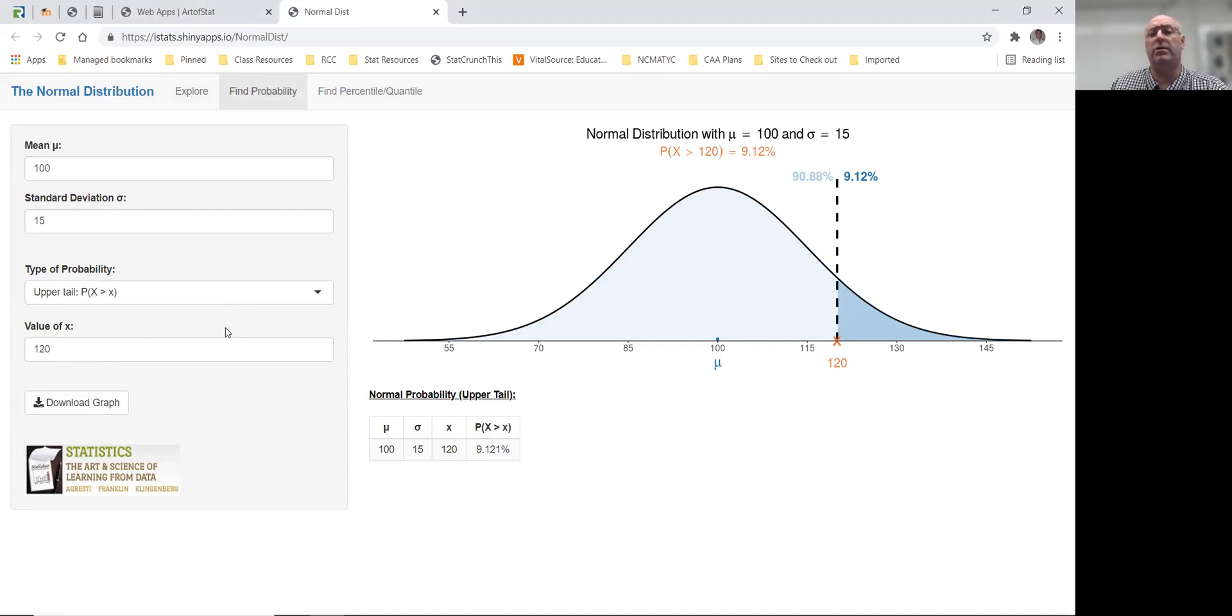The other way you might use this calculator is to find a percentile or quantile. Remember that a percentile is the percent of data that is below a certain value. And so using these same mean and standard deviation of IQ scores...